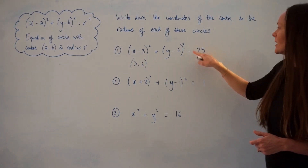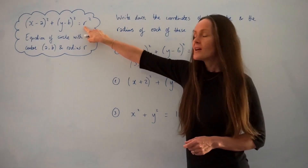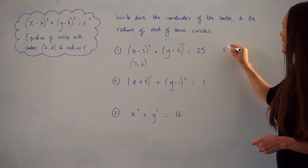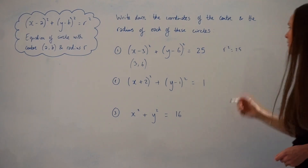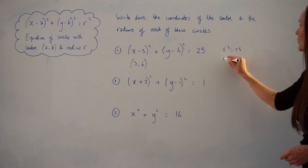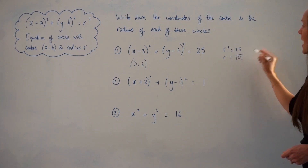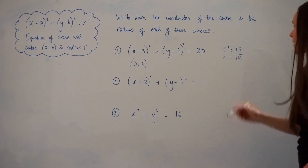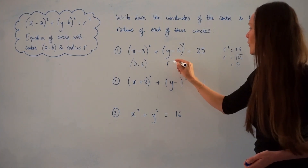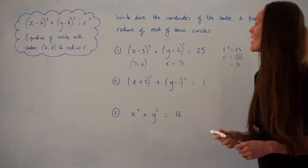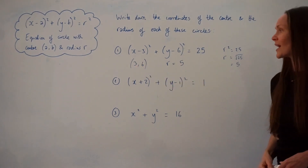This value here is equal to r squared. So if r squared is equal to 25, to solve that and find the value of r, you do the opposite of squaring, which is square rooting. The square root of 25 is 5. So the radius of this circle is 5 and the centre lies at (3, 6). That's the first one.